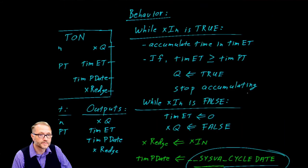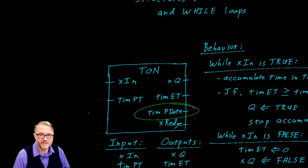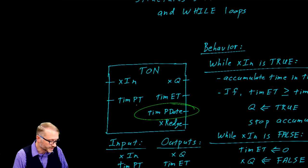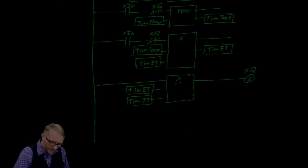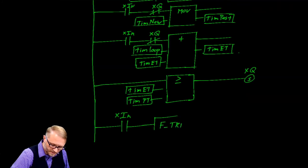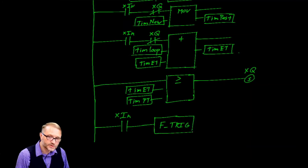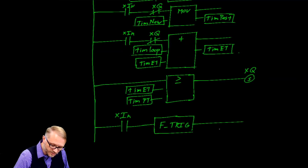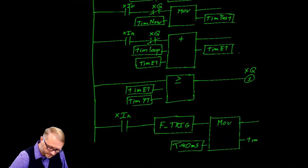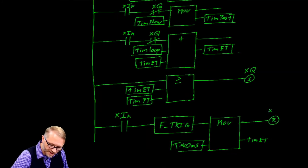That's actually this variable called the previous date — we stop updating it when elapsed time is greater than or equal to program time. One more rung and this is complete. We need to look at the boolean input — in particular, the falling edge. So a falling edge trigger. There are two things we need to do: first, move time zero milliseconds into elapsed time, and also reset the latch on Q.